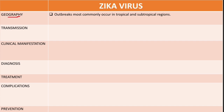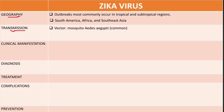On geographical distribution, outbreaks of the Zika virus occur mostly in tropical and subtropical regions, particularly in South America, Africa, and Southeast Asia. On transmission, the Zika virus is transmitted by the Aedes aegypti mosquito, and other hosts include monkeys and apes.